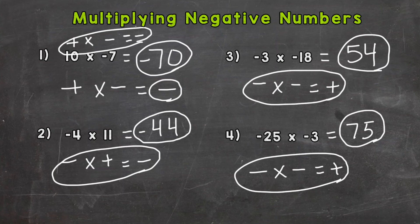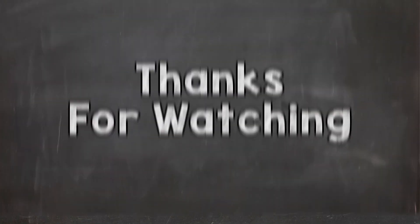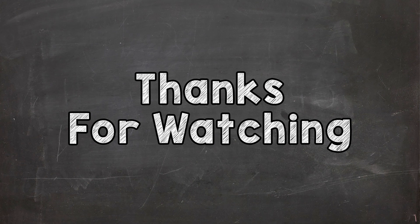So there you have it — those are the rules for multiplying negative numbers. A positive times a negative equals a negative. A negative times a positive equals a negative. And a negative times a negative equals a positive. Hopefully that helped. Thanks so much for watching.